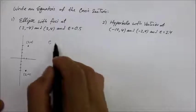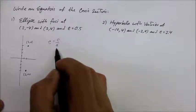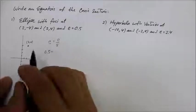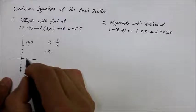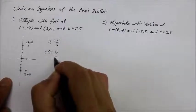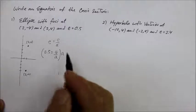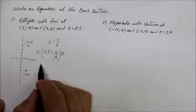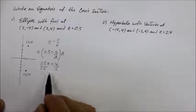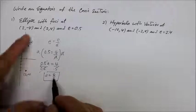The eccentricity for an ellipse, the rule is e equals c over a. I need to find what c and a are, as well as b, so I can write the standard form. The e is given as 0.5, so 0.5 equals c over a. The distance from the center of this ellipse to the focus is four, so c is four. Solving for a: 0.5a = 4, therefore a equals eight.